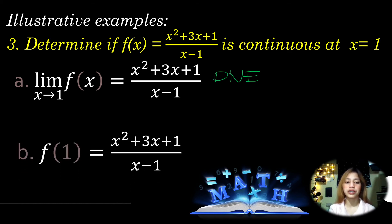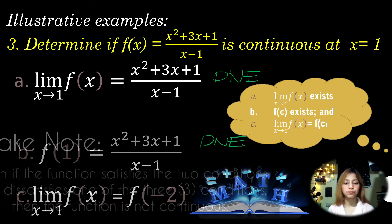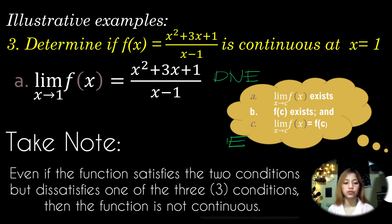Similarly for condition b, finding the value of the function gives the same undefined result — it does not exist. So the function for number 3 does not satisfy the first and second conditions. Therefore, it is not continuous at x = 1. Dissatisfying even one of the three conditions for continuity can lead to discontinuity of the function.